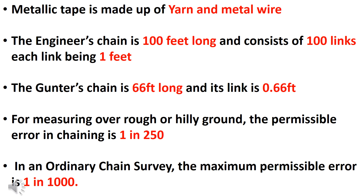For measuring rough or hilly ground, the permissible error in chaining is 1 in 250. In ordinary chain survey, the maximum permissible error is 1 in 1000.